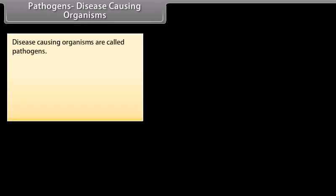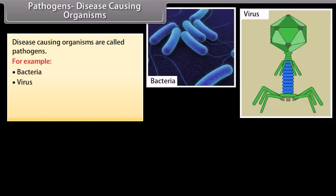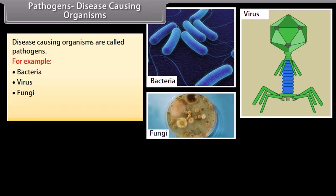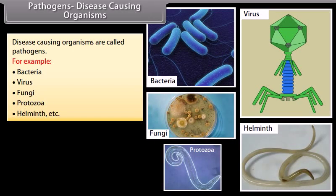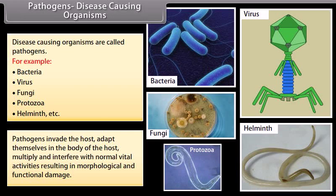Disease-causing organisms are called pathogens. For example, bacteria, viruses, fungi, protozoans, helminths, etc. Pathogens invade the host, adapt themselves in the body of the host, multiply and interfere with normal vital activities, resulting in morphological and functional damage.